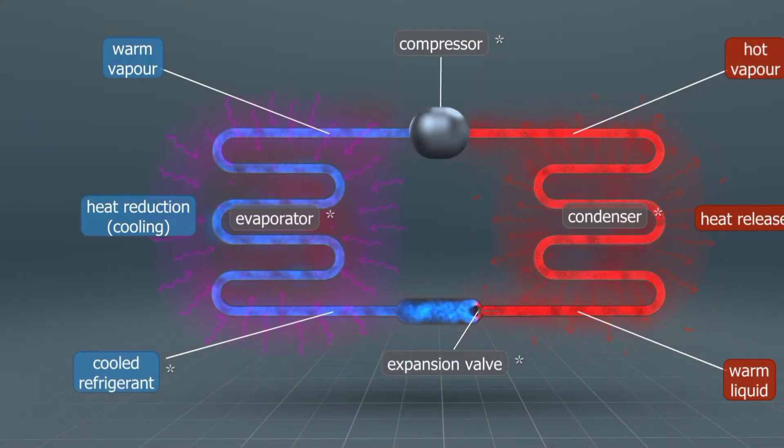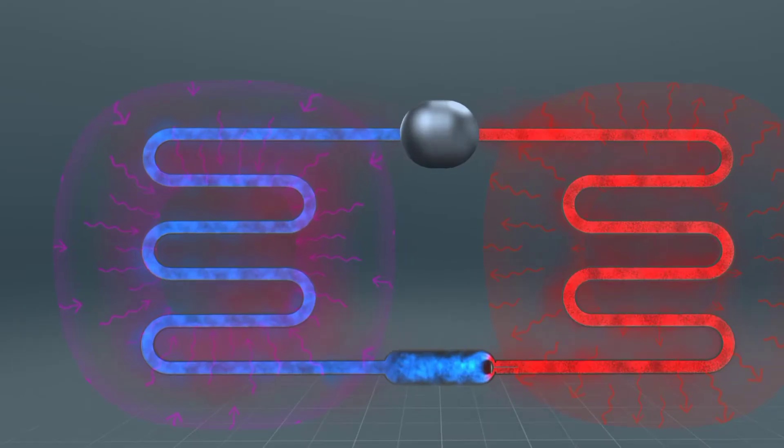The refrigerant, a cold mixture of vapor and liquid, flows into the pipe system in the evaporator. Due to the difference in temperatures, the refrigerant draws heat away from the food compartment. The refrigerant becomes hot and fully evaporates, which draws away more heat.